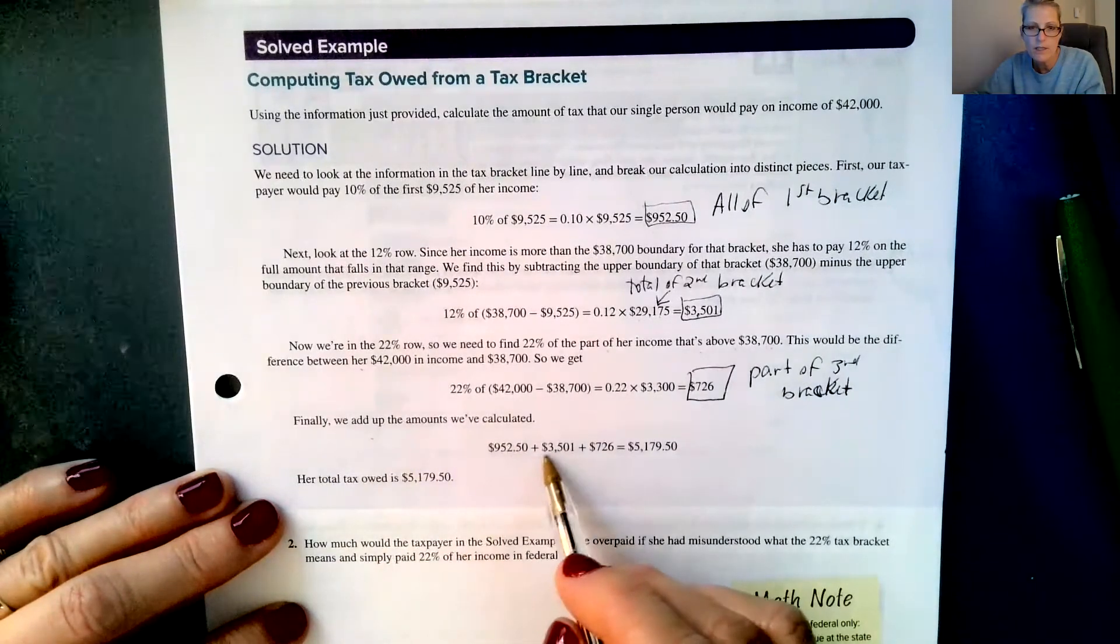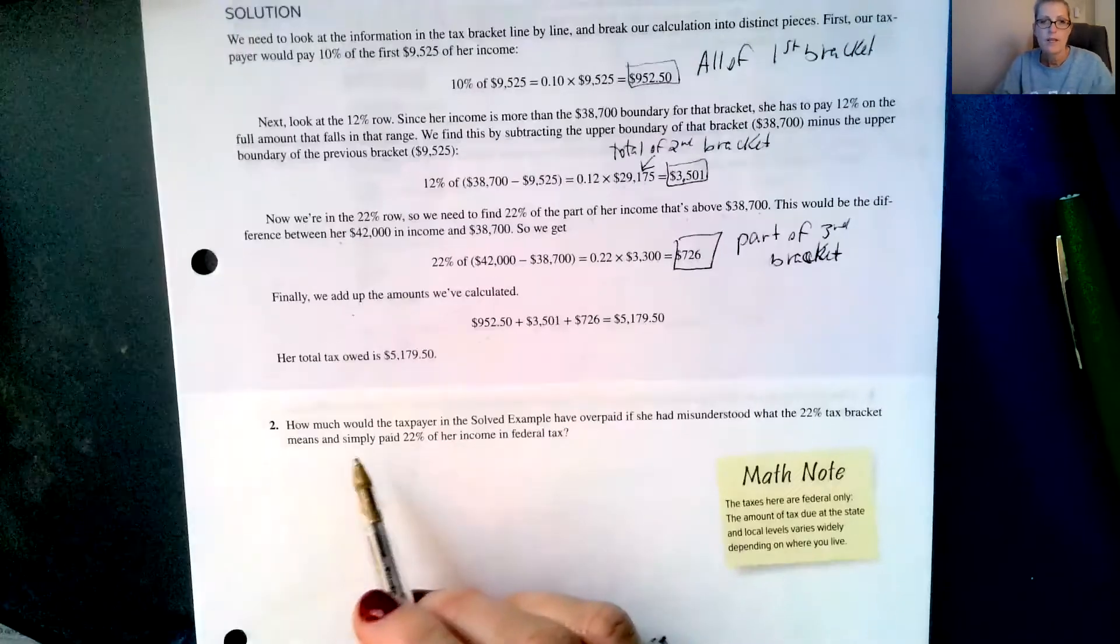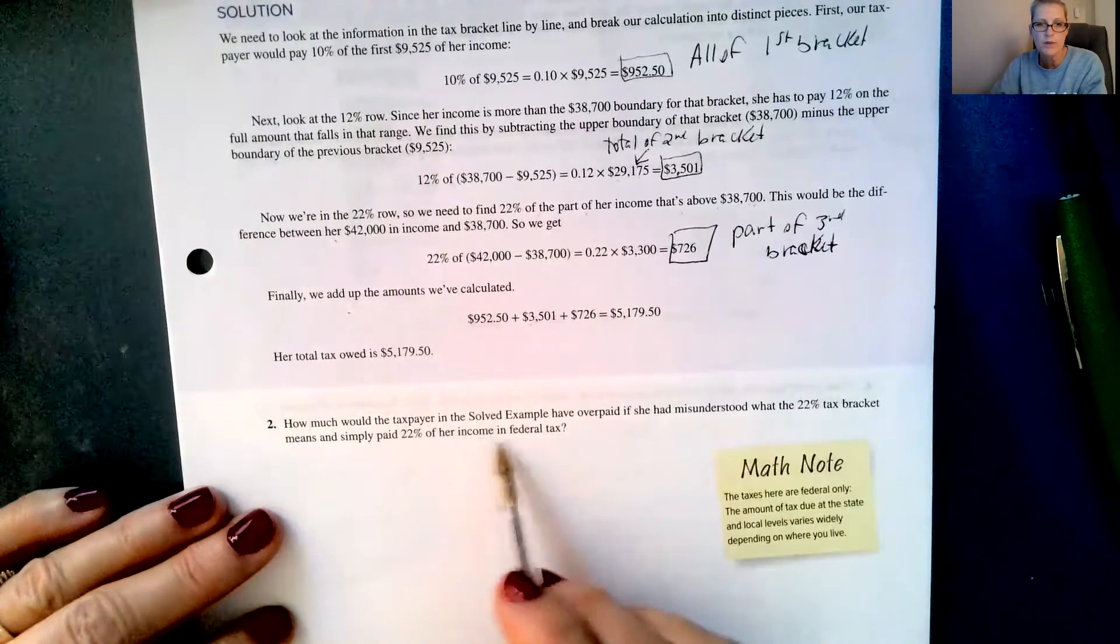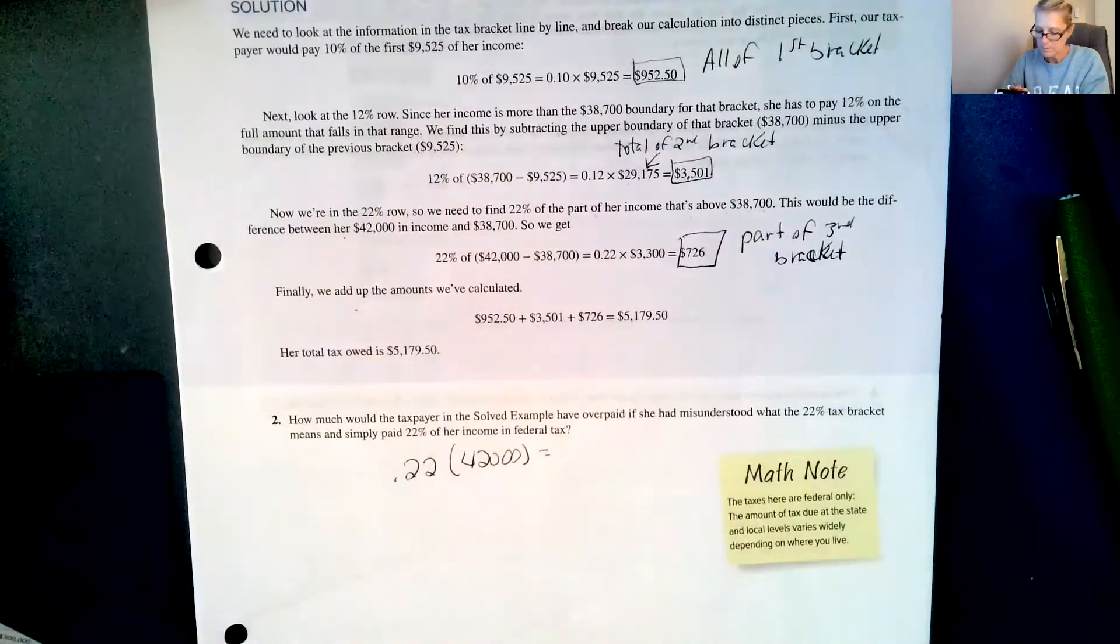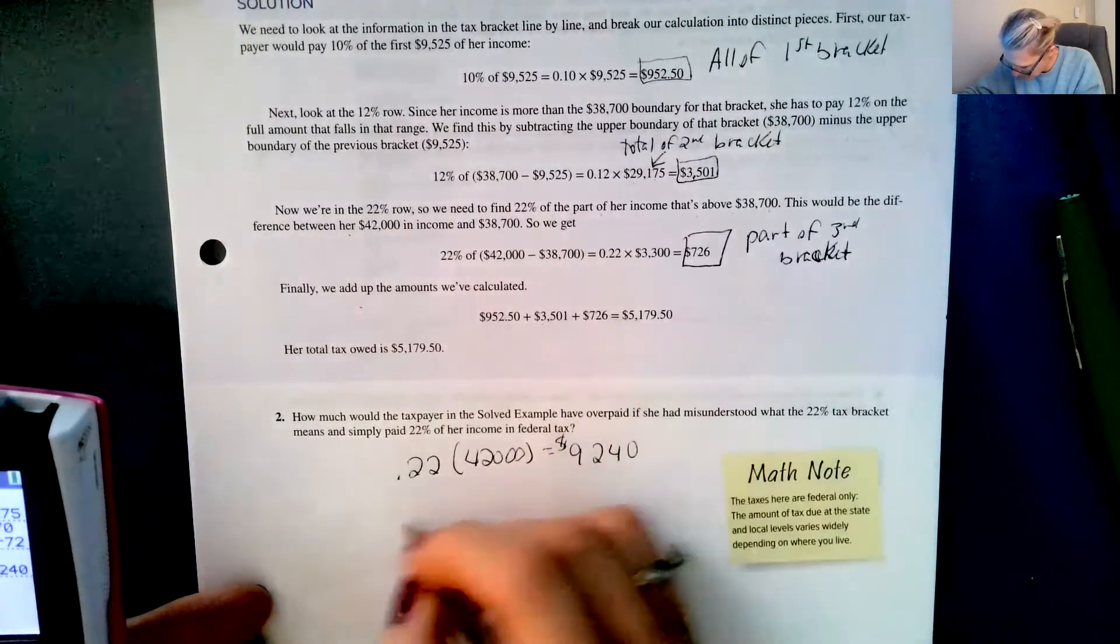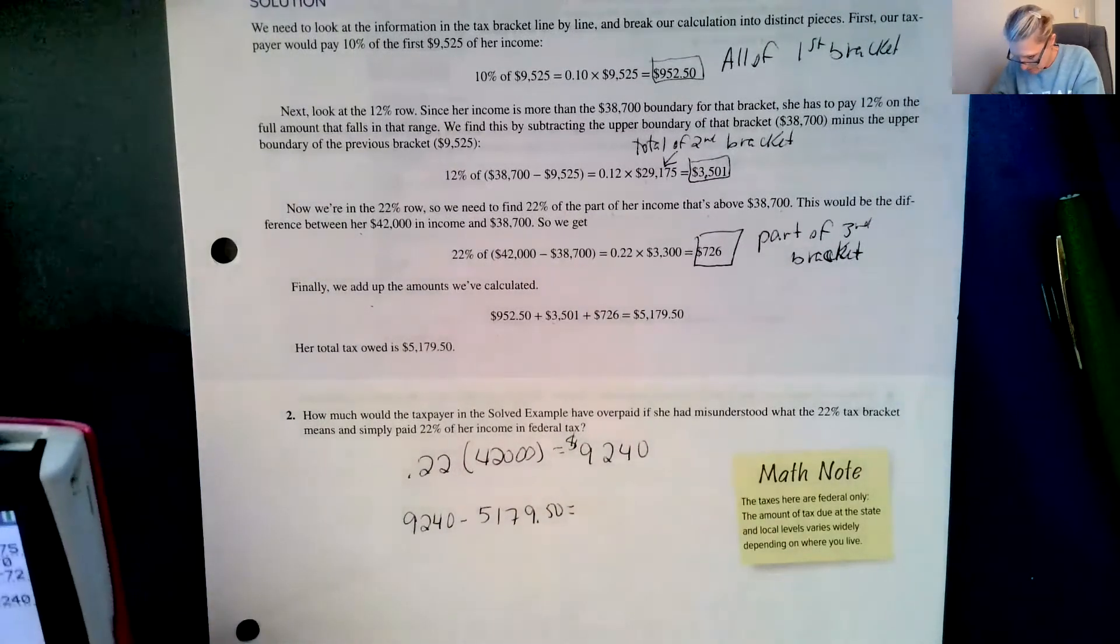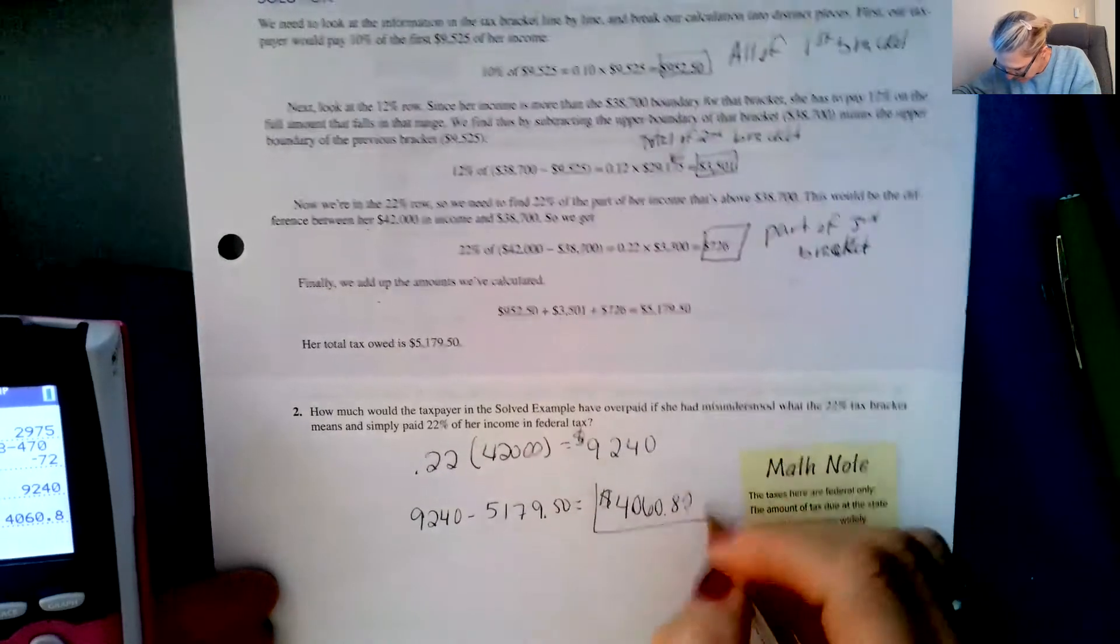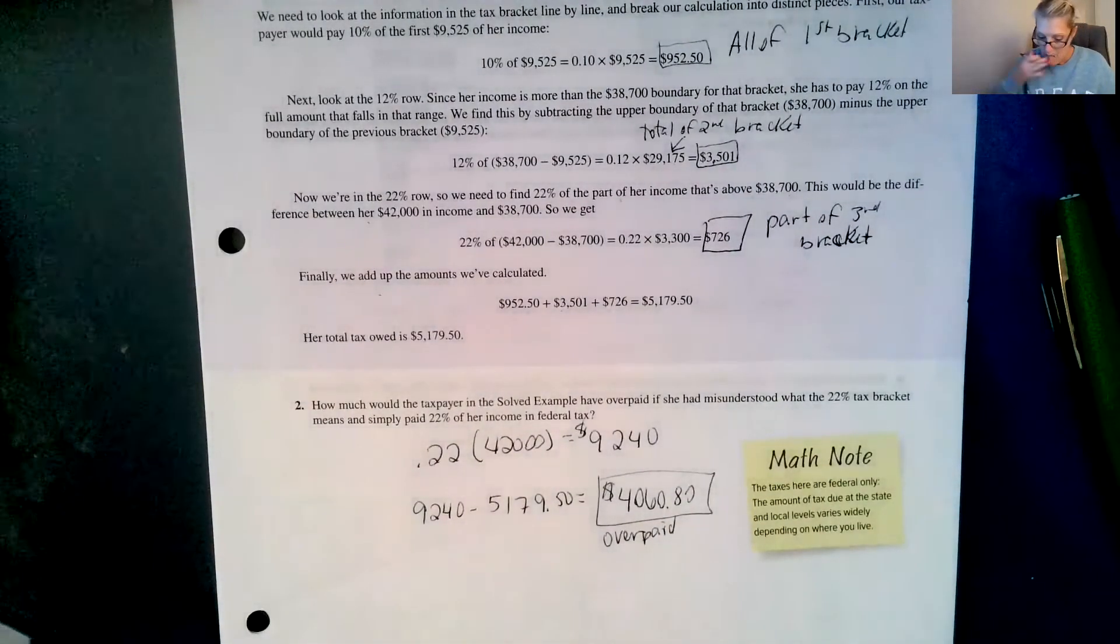Finally, we add up the amounts we've calculated: $952.50, $3,501, and $726. So her total tax owed is $5,179.50. So how much would the taxpayer in the solved example have overpaid if she had misunderstood what the 22% tax bracket means and simply paid 22% of her income in federal tax? So she would have paid 22% of all of the $42,000, so she would have paid $9,240. And if we subtract what she really has to pay, she would have overpaid by $4,060.50. Glad she didn't.